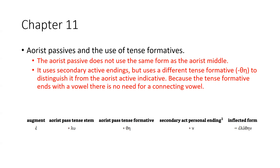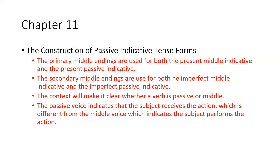Because the tense formative ends with a vowel, there is no need for a connecting vowel. The way you form the aorist passive is with the augment epsilon, the aorist passive tense stem — in this case, lu — the aorist passive tense formative theta-eta, and the secondary active personal ending nu, which gives you the inflected form eluthane (ἐλύθην).